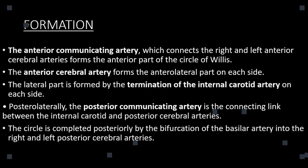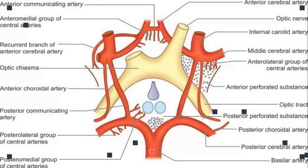Let me show you that on an image. You can see the basilar artery bifurcating into the two posterior cerebral arteries. The posterior cerebral arteries are attached to the internal carotid artery by the posterior communicating artery — this forms the posterior lateral part. The anterolateral part is formed by the anterior cerebral artery, and the anterior part of the circle is formed by the anterior communicating artery connecting the left and right anterior cerebral arteries.